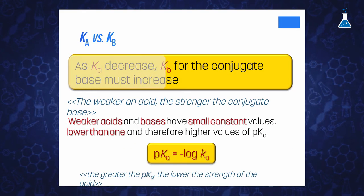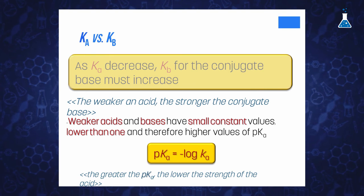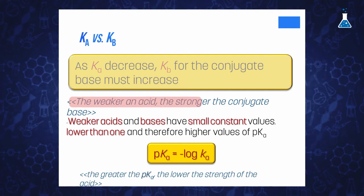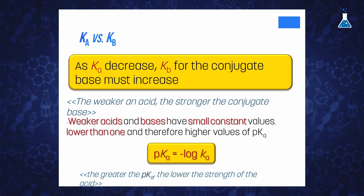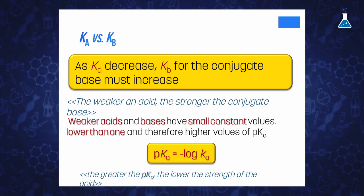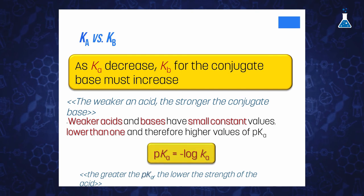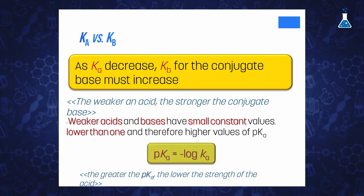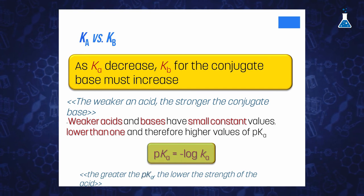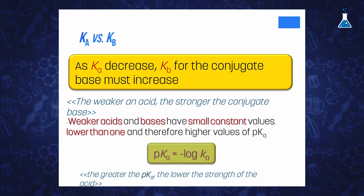We can conclude that as Ka decreases, Kb for the conjugate base must increase. In other words, the weaker the acid, the stronger the conjugate base. Weak acids and bases have a small constant value lower than 1, and in the same way we define pH, we use the term pKa, defined as the minus logarithm of Ka. So the greater the value of pKa, the lower the strength of the acid.